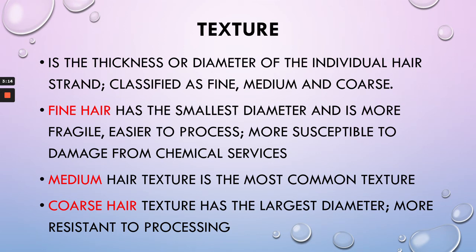Texture is the thickness or diameter of an individual hair strand, classified as fine, medium, and coarse. Fine hair has the smallest diameter and is more fragile, easier to process, and more susceptible to damage from chemical services. Fine hair may have up to four to six layers of cuticle. Medium hair texture is the most common. Coarse hair texture has the largest diameter and is more resistant to processing — coarse hair may have up to 18 layers of cuticle before even getting to the cortex.